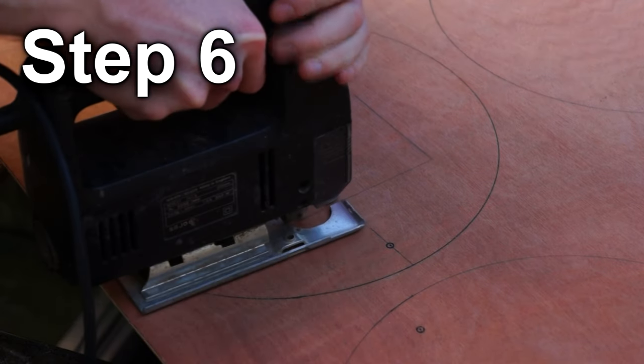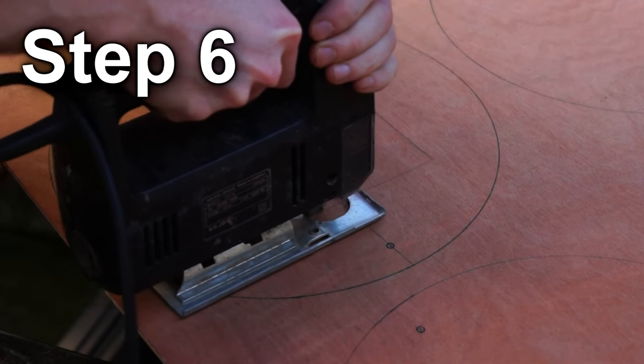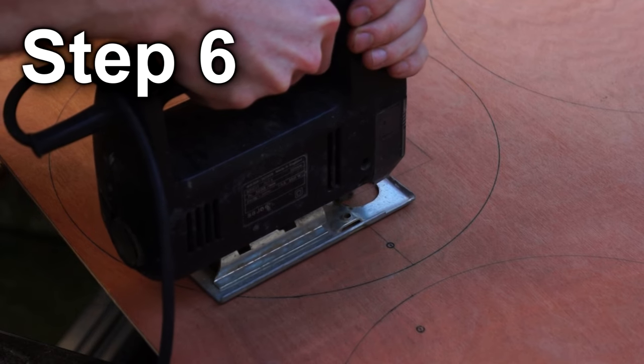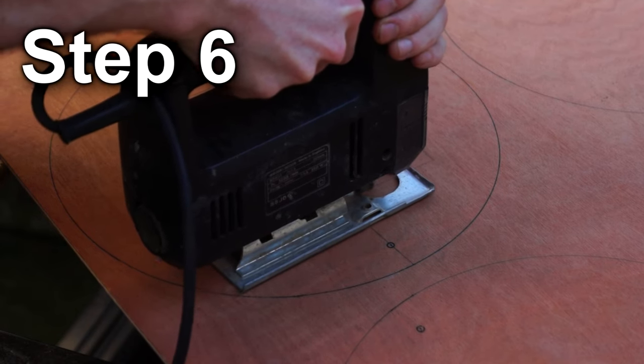Use a jigsaw to cut out all the pieces, and a drill to make the bat pinholes. Notice also that I cut out a section to enable me to remove the square bat.